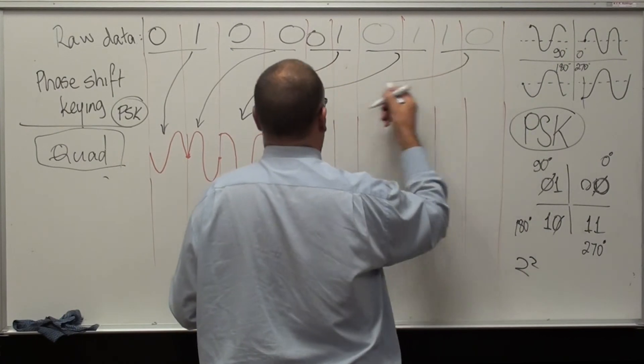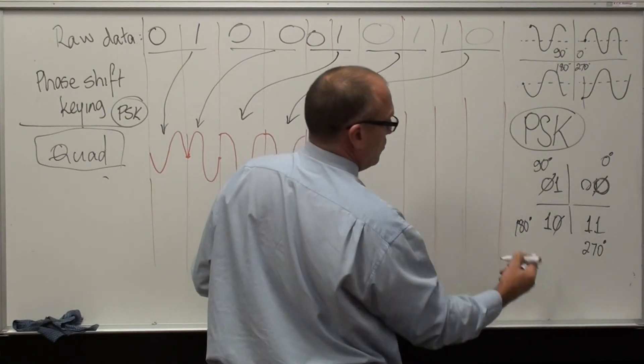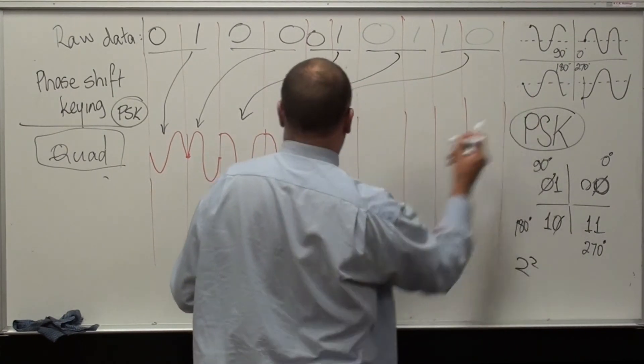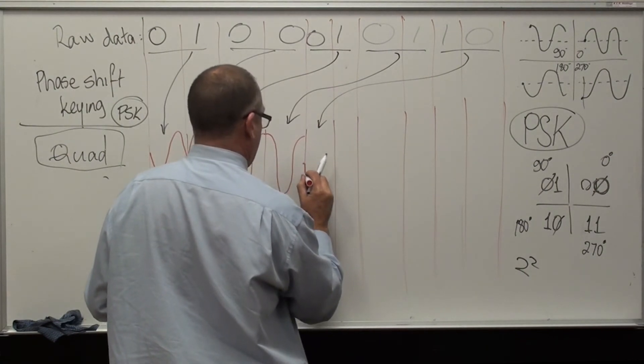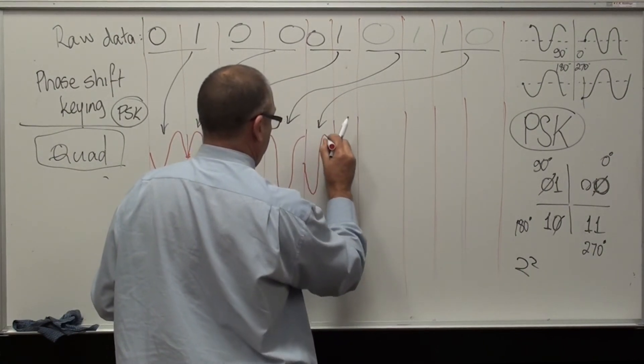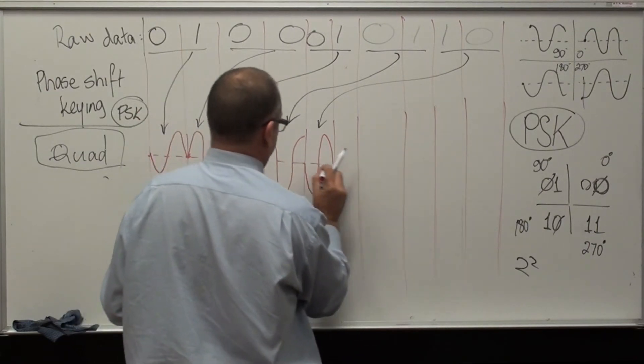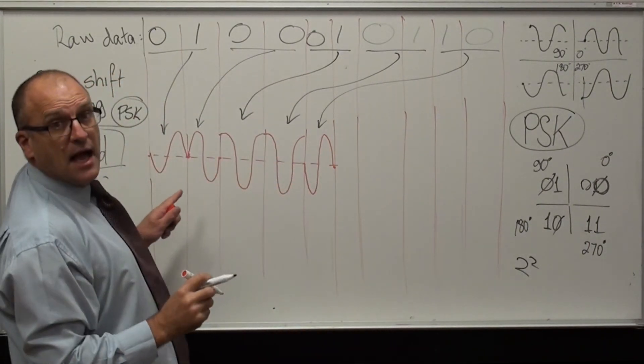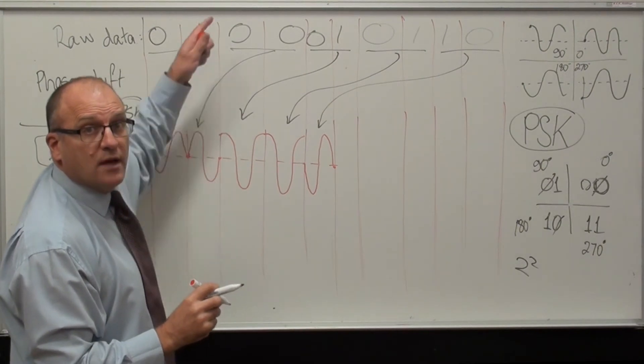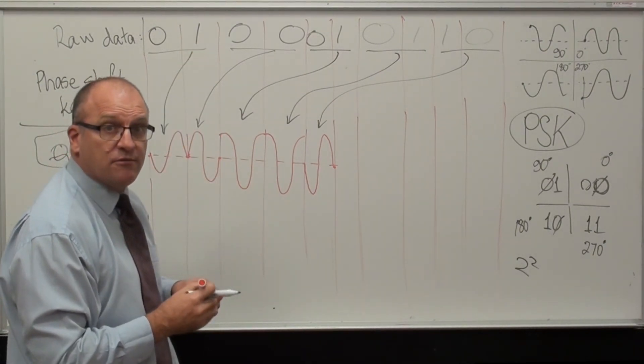1, 0. 1, 0 is 180. Start there. So, in half the time, we have transmitted the same amount of numbers.